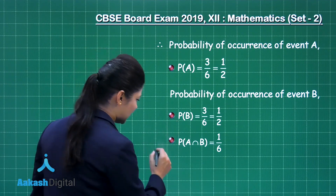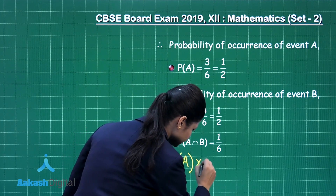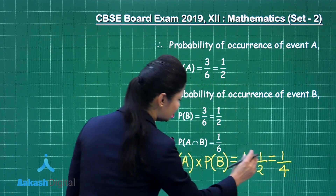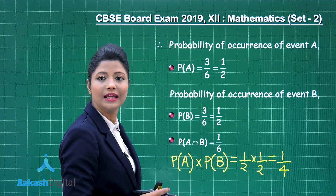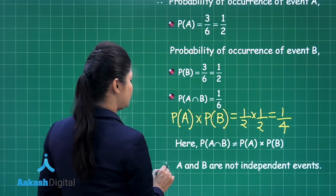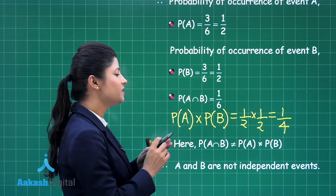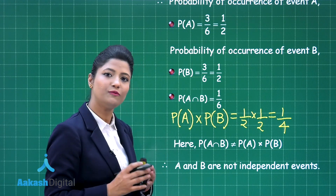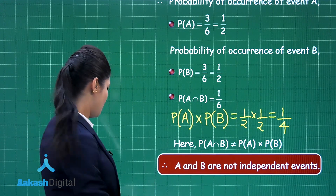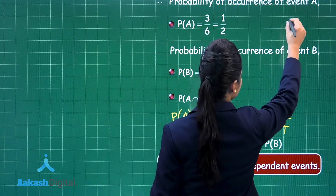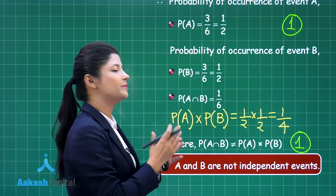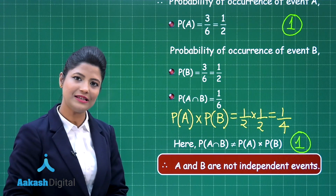Now checking independence: P(A) * P(B) = 1/2 * 1/2 = 1/4. But P(A ∩ B) = 1/6 ≠ 1/4. Since P(A ∩ B) is not equal to P(A) * P(B), events A and B are not independent. Obtaining all the probabilities gives 1 mark, and showing that they are not independent gives the remaining 1 mark, totaling 2 marks for this question.